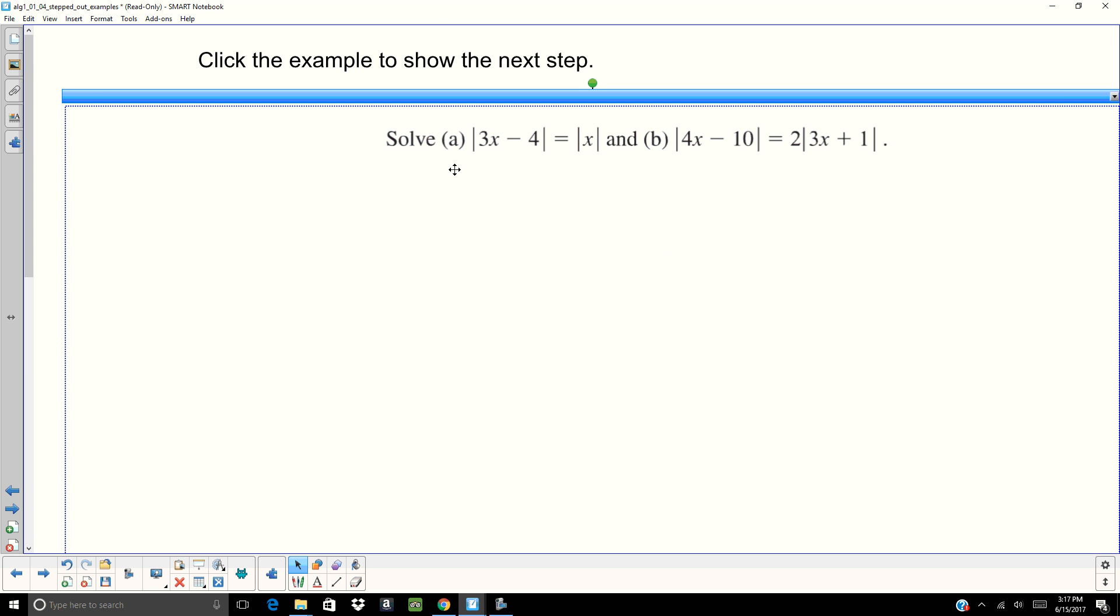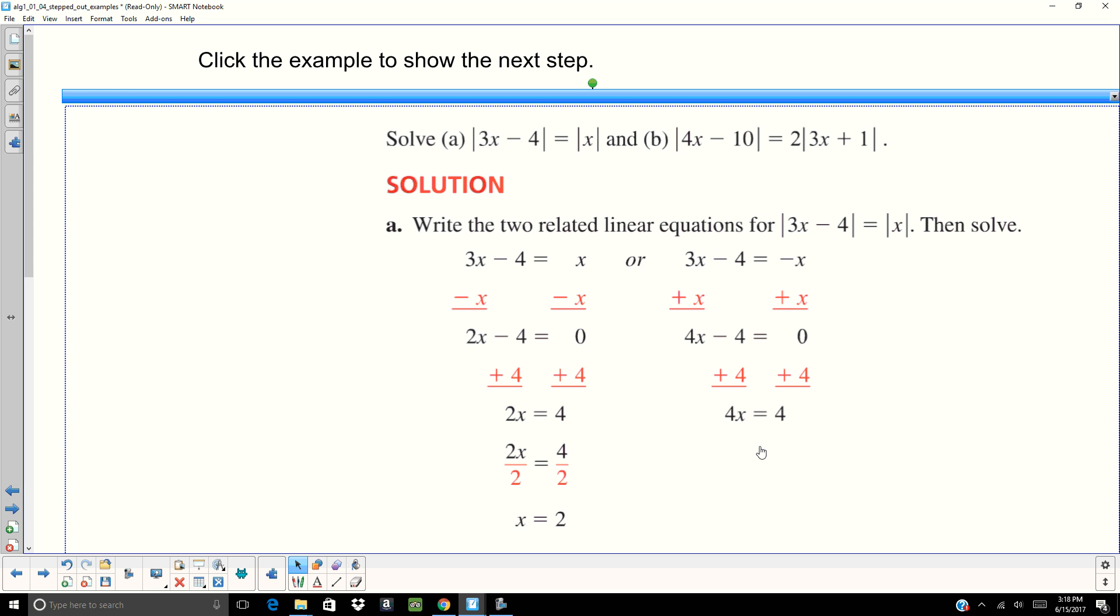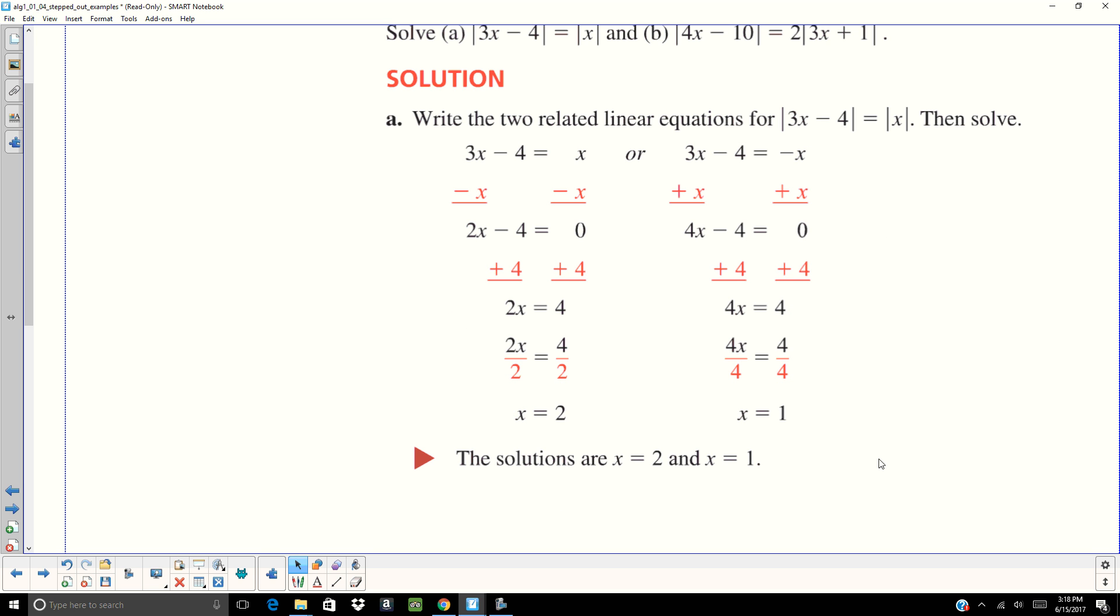So let's go ahead and solve one of these. 3X minus 4 equals X. So you're going to have to go ahead and set up your two scenarios, 3X minus 4 equals X, or 3X minus 4 equals negative X. Now, we just have variables on both sides of the equal sign, so we need to isolate them, get them over to one side. So subtract X, 2X minus 4 equals 0, add 4, 2X equals 4, divide by 2, X equals 2. Do the same thing on the other side. Add X to both sides. 4X minus 4 equals 0. Add 4 to both sides. 4X equals 4. Divide by 4. X equals 1. So my two solutions are X equals 2 and X equals 1.